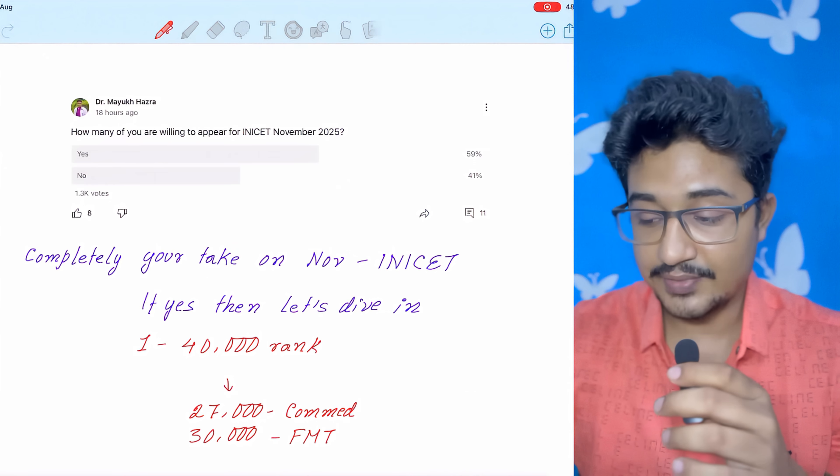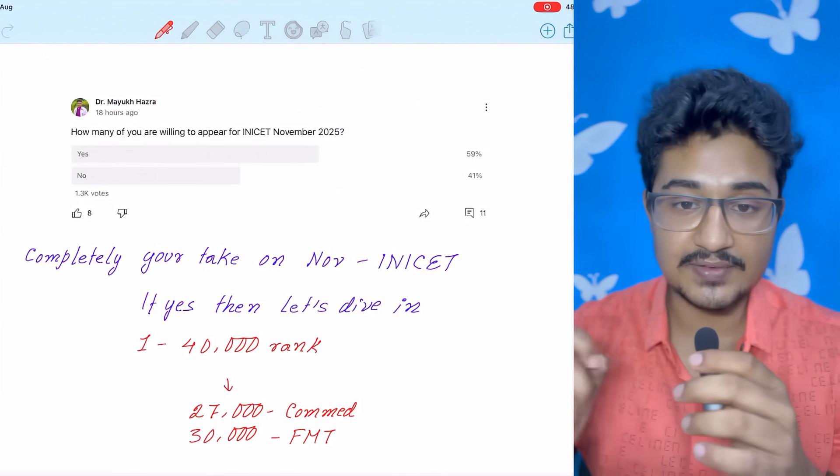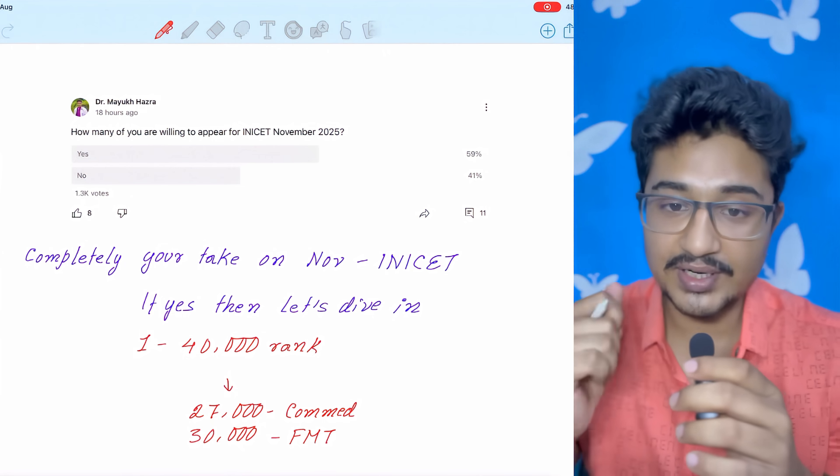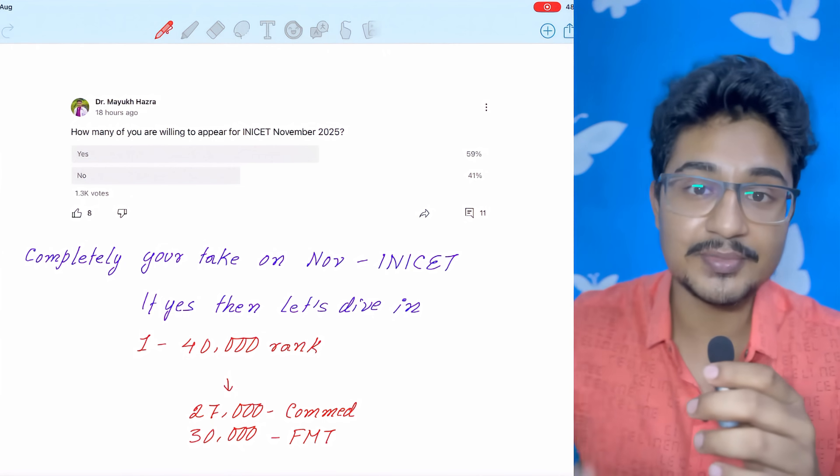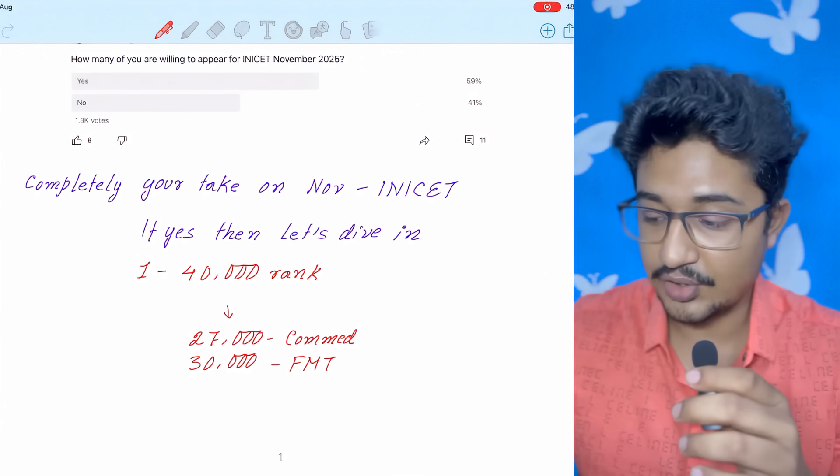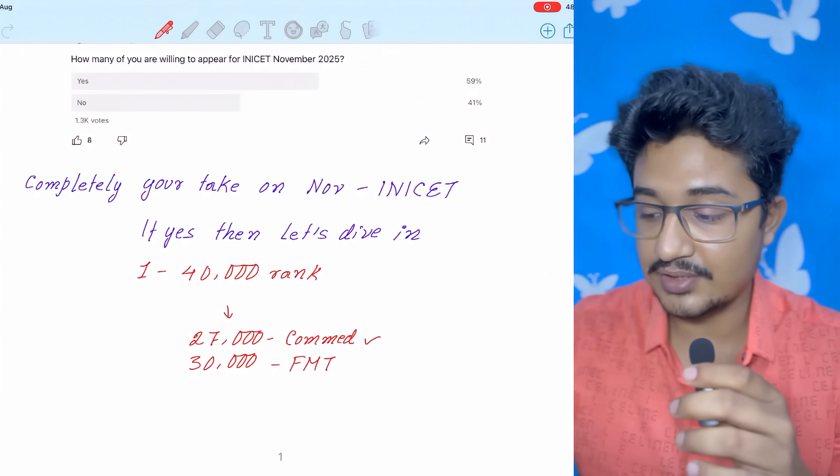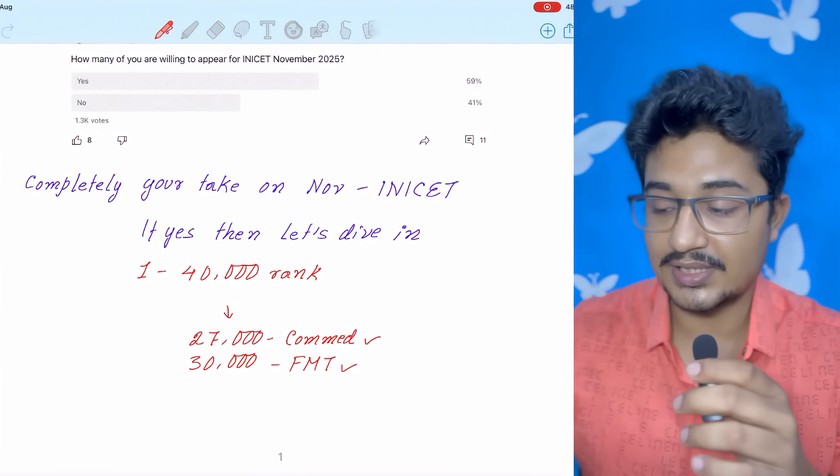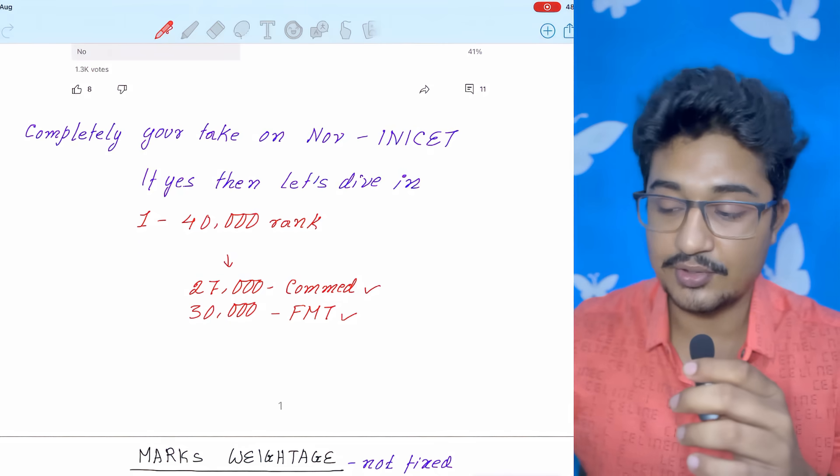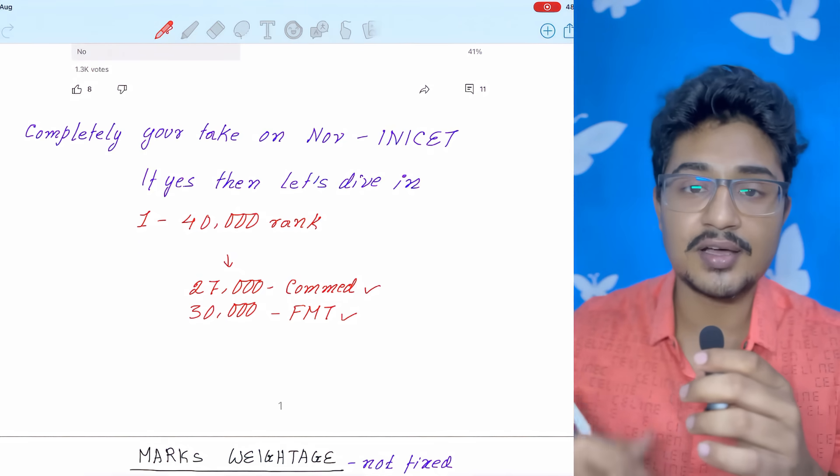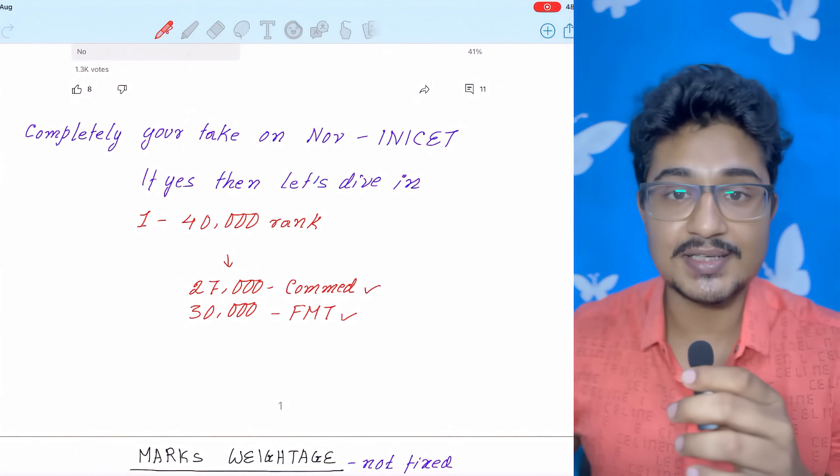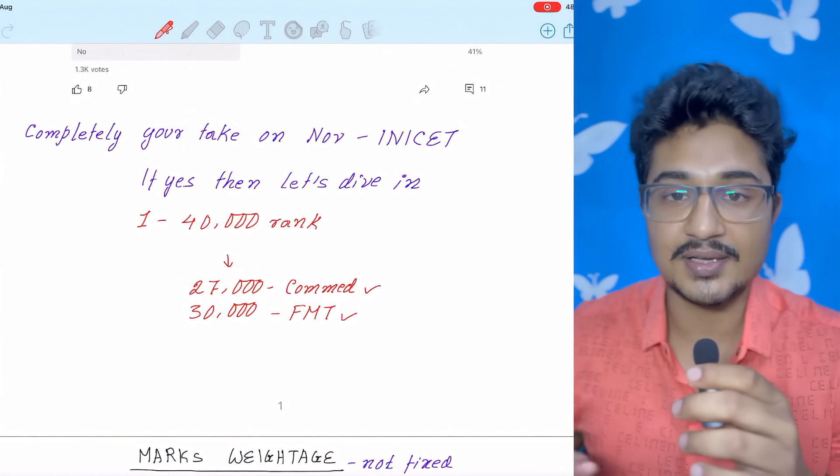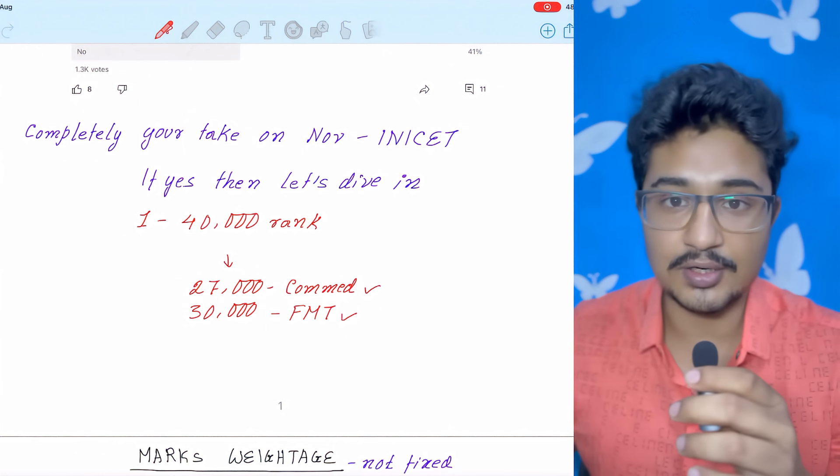If you are ranking in between 1 to 40,000 then I will say that definitely you should give INICT a try if you are ready to give more three months to your preparation. Because in last year November INICT with 27,000 rank, an aspirant got community medicine. With rank of 30,000, one aspirant got FMT. So there are a lot of chances. Now INICT is not only just for the top 1000 or 2000 rank. Now the seats have increased a lot.